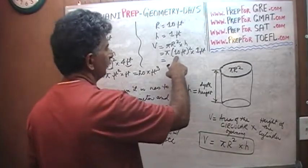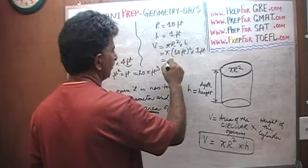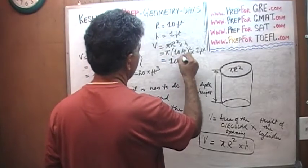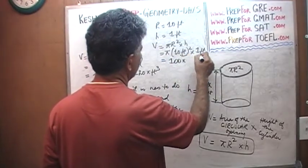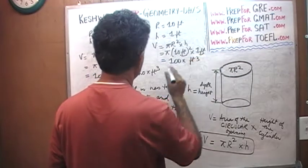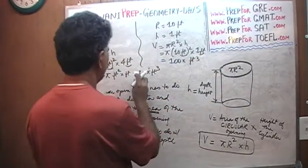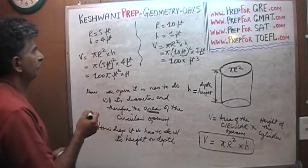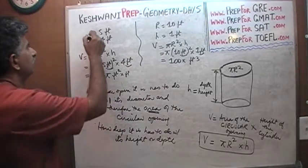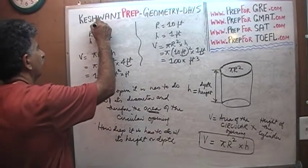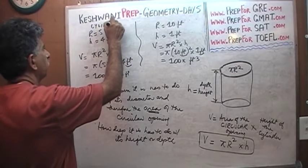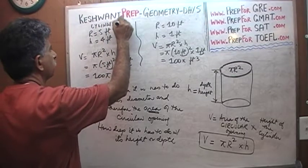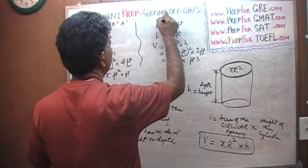I knew something was fishy because the whole thing was not turning out as I had planned. So here: 10 squared is 100, times pi — that gives you 100 pi. And feet squared times feet gives you cubic feet. It turns out both of these cylinders — let's call them Cylinder A and Cylinder B — have the same volume.